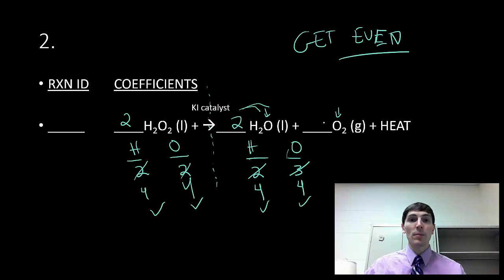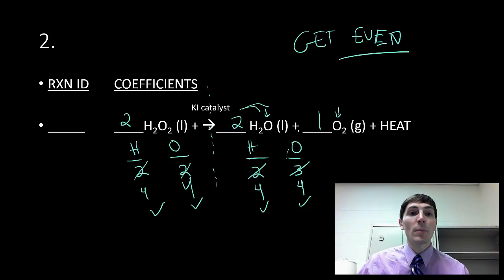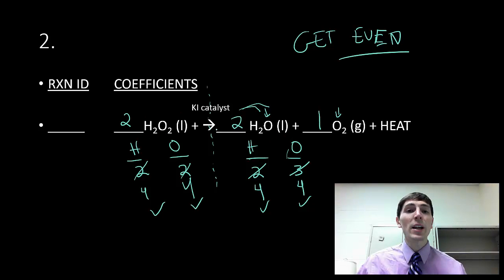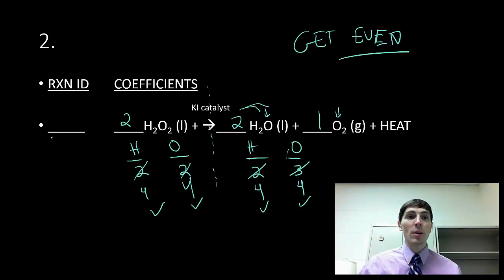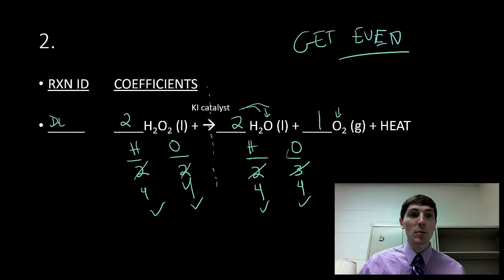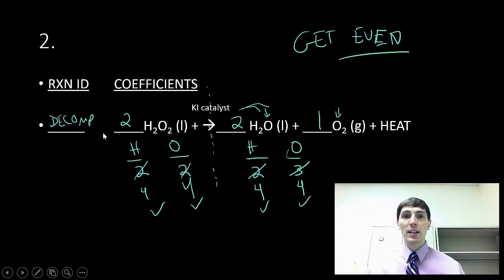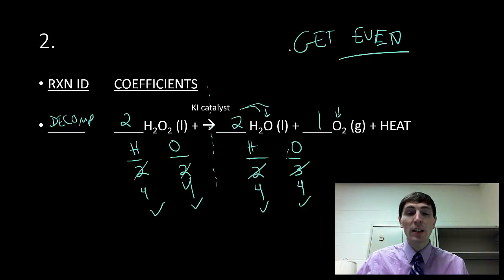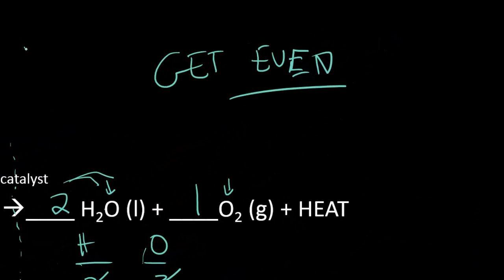Everything balances out, so I'm going to put a 1 in all my empty coefficient spots. Now I'll figure out what kind of reaction this is. I have a compound that is breaking into more compounds — a compound breaking into a compound plus a compound. We call this idea of breaking apart things a decomposition. It's decomposing. One last note on the 'getting even' strategy: you're going to want to get even whenever you have odd coefficients and just can't seem to get it to balance.